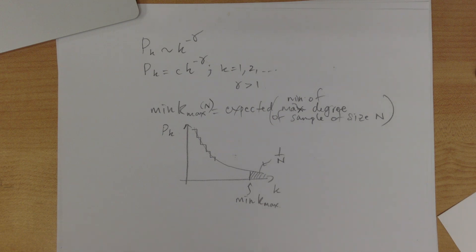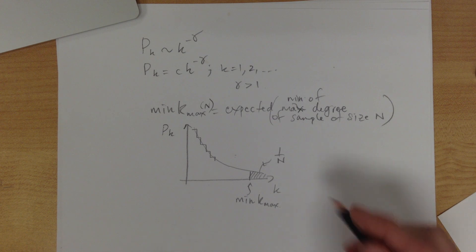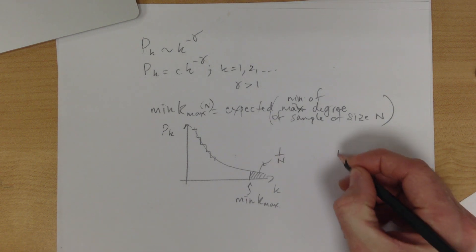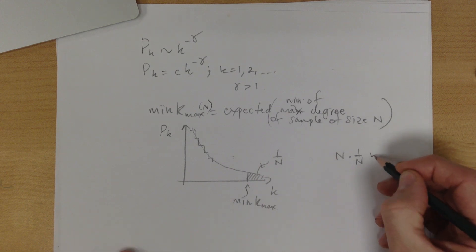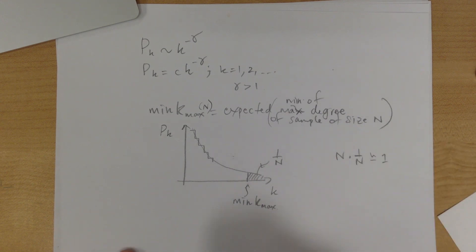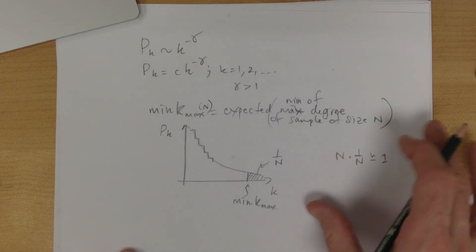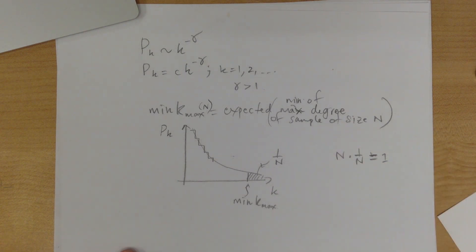All right, so from—and that makes—this is a rough thing. So if we have N samples, N times one over N, which is the chance of getting in there, is one, right? So this is what we're—I mean, it equals one. So this is our approximate story.